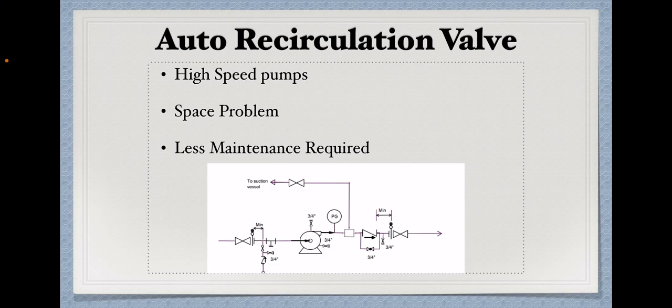So, as the forward flow drops, the pump discharge pressure increases and at a certain point, the spring in the auto recirculation valve will open to maintain the recirculation flow. So, this ARV is very reliable in nature and very less maintenance is required.